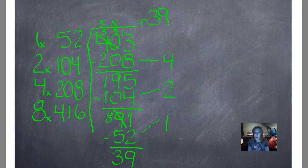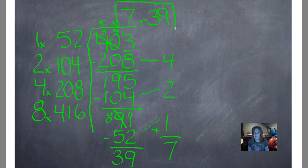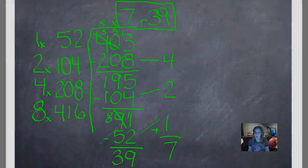And then we'll add up our quotient. 4 plus 2 plus 1 is 7, so 7 is our quotient. And to check it, we multiply 52 times 7, and then add 39. We should get our dividend of 403.